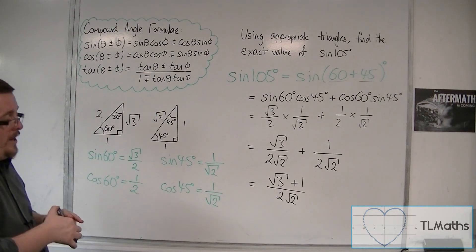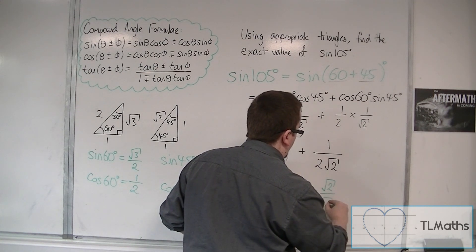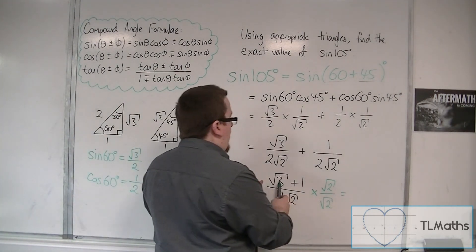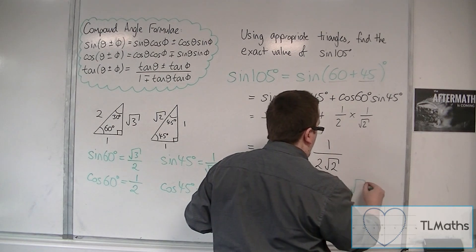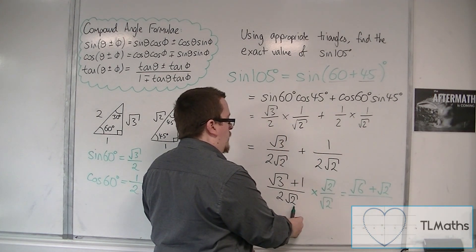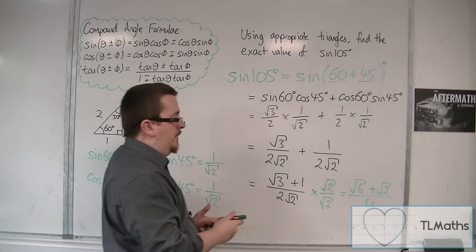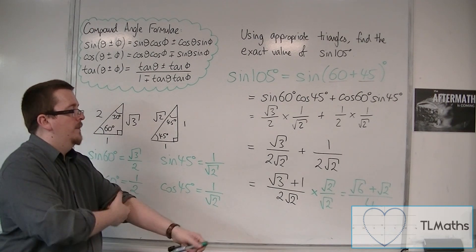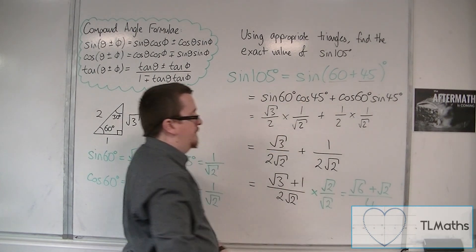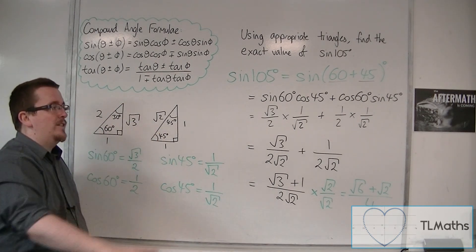You could rationalise the denominator here, so you could multiply top and bottom by root 2 — thinking back to core 1. We're going to get root 3 times root 2, so that's root 6, and 1 times root 2, so just root 2, divided by 2 times root 2 times root 2, so that's 2 times 2, which is 4. So it would be a quarter of root 6 plus root 2. So either this answer, or rationalise the denominator — that answer. And that's how we can use the compound angle formulae to work out exact values.